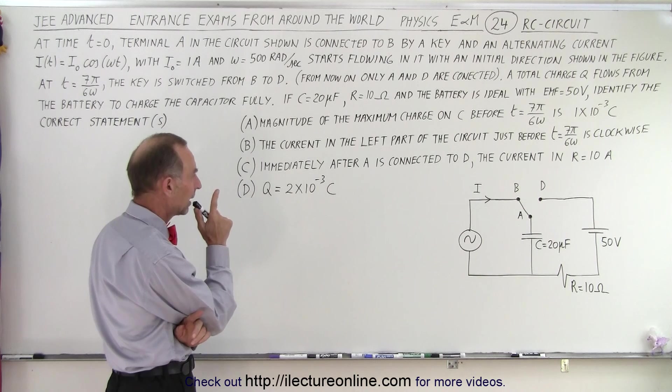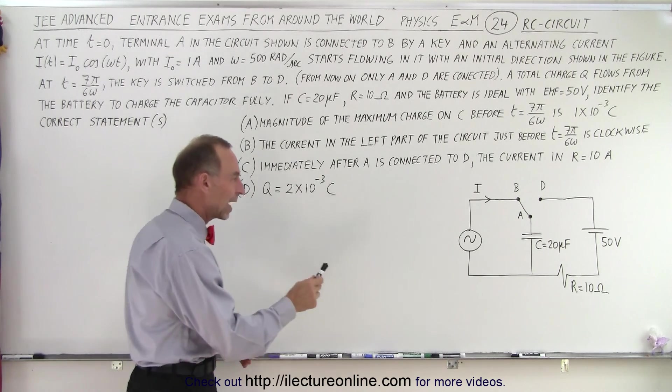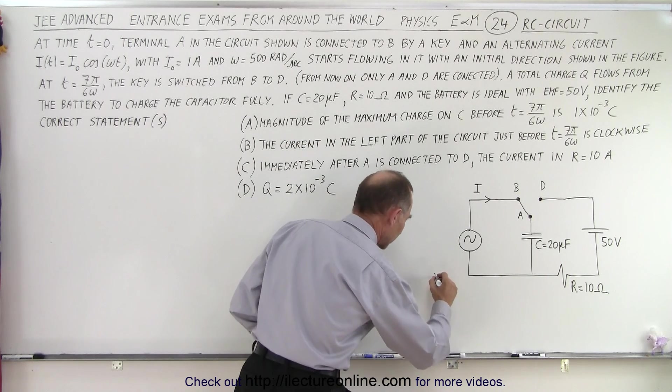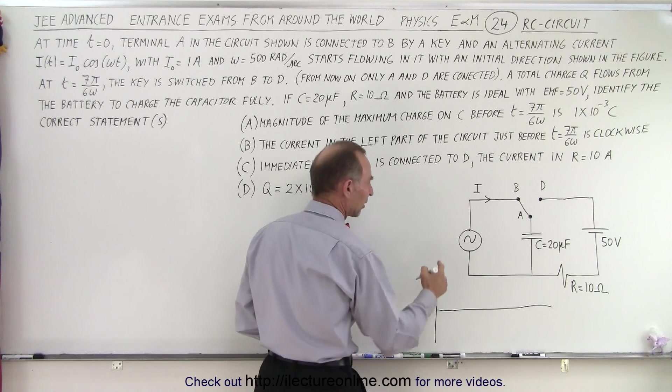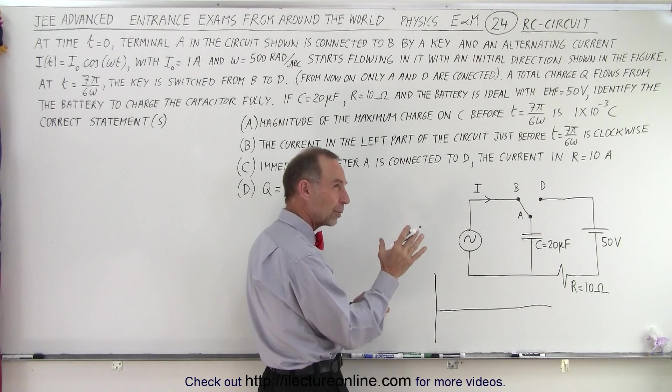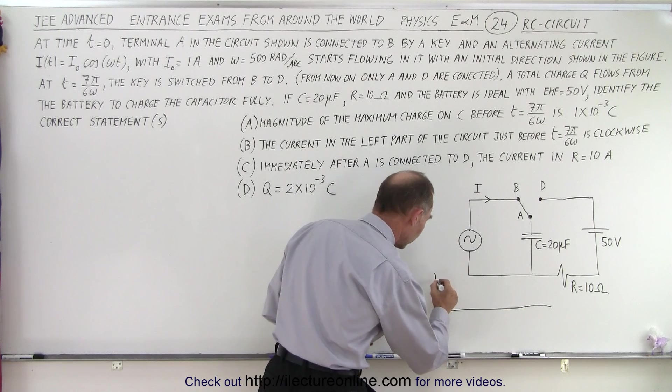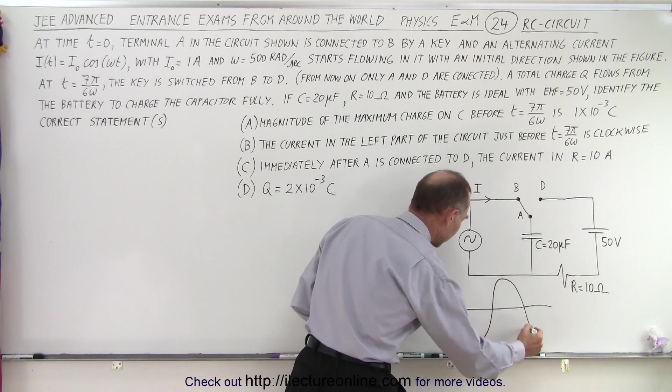How do we do this? First of all, in order to understand what's going on with an alternating voltage source, I think it's a good idea to draw a quick picture of what is happening. So first, let's draw the current. It has a cosine function, so the cosine when t equals zero is one. So the current will look like this. It will be an oscillating current like this.